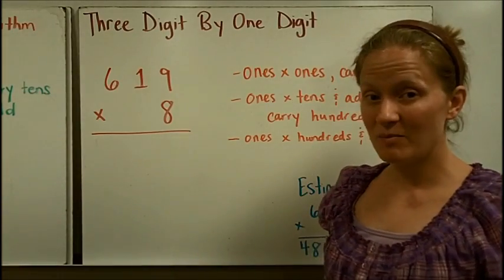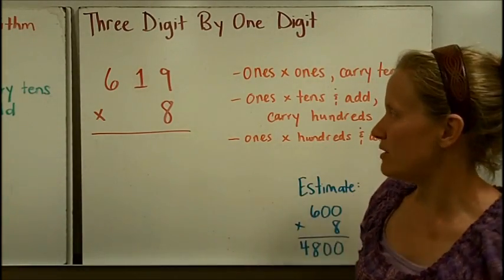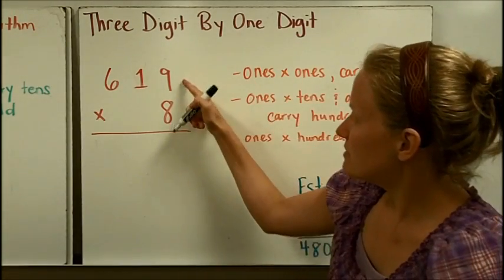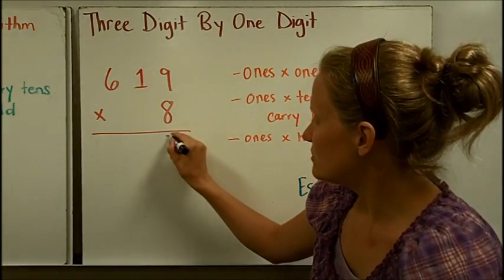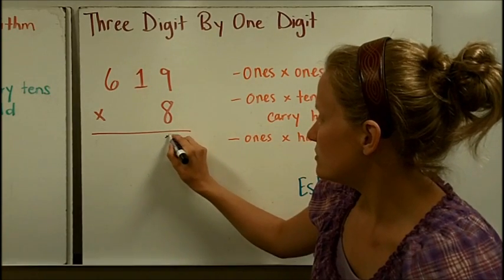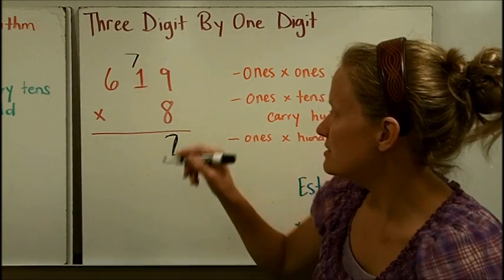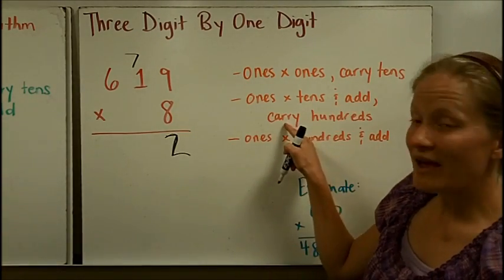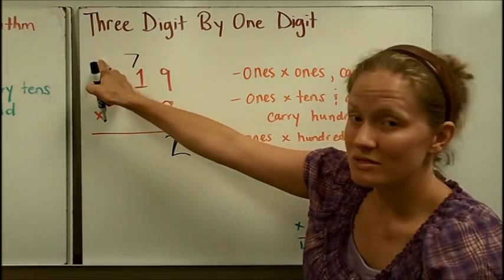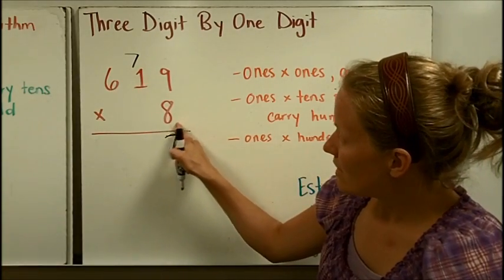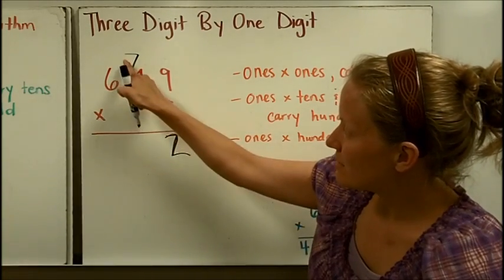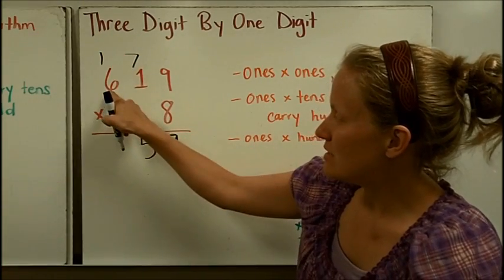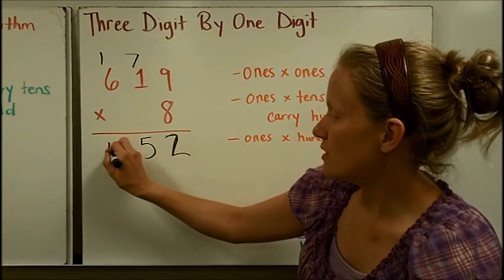Next, a 3 digit by 1 digit, which is a lot like the 2 digit by 1 digit problem. We're going to do the ones times the ones and carry the tens. 9 times 8 is 72. Put the 2 here, carry the tens. Then I'm going to do ones times tens and add, but this time I have to carry if I have any hundreds to carry. So, 8 times 1 is 8, plus 7 is 15. So, I'm going to carry the hundred. 6 times 8 is 48, plus 1 is 49.